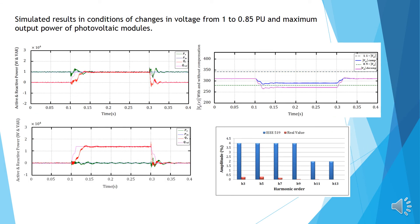In conditional voltage drop from 1 to 0.85 per unit and maximum output power of the photovoltaic module, inverter has produced 10 kW reactive power. In the down figure, active power is zero and the inverter is offered all its capacity to supply the reactive power while it compensates the voltage of the grid as shown in top figure on the right. In this case, the THD is 1.6%.